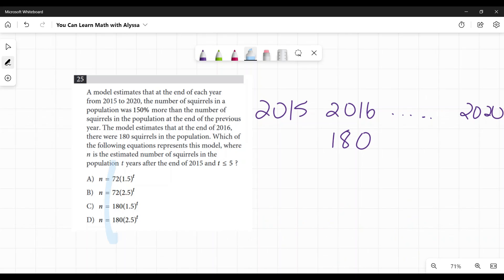So our question we first need to ask is, are we starting at 72 or are we starting at 180? Well, at the end of 2016, there was 180, but they want to know the model that starts at the end of 2015. So even before I've done the math, I know it's not going to be 180 because there were fewer squirrels in 2015. So I know C and D are out. I know that 2015, there were 72 squirrels.